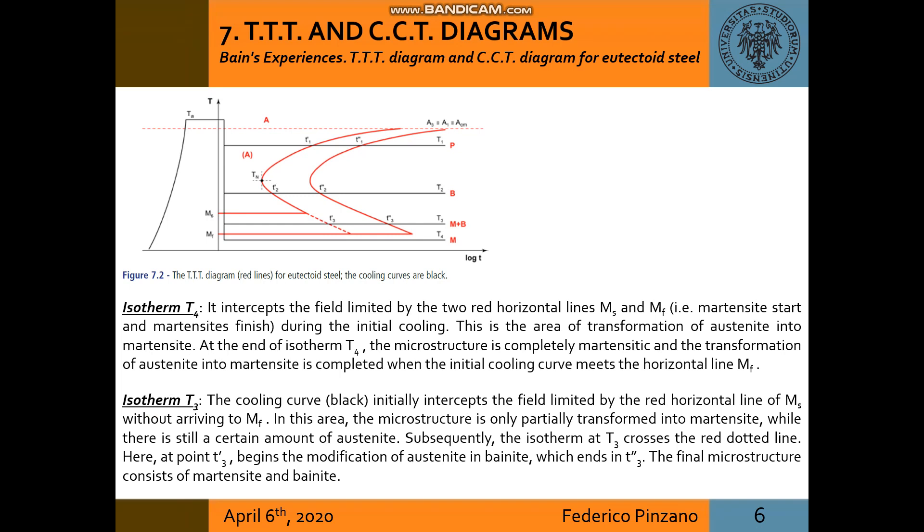Considering isotherm T4, it intercepts the field limited by the two red horizontal lines MF and MS during the initial cooling. This is the area of transformation of austenite into martensite, so at the end of isotherm T4, the microstructure is completely martensitic.